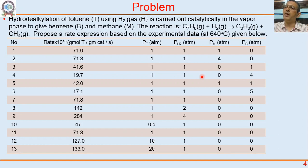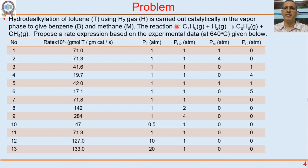For example, hydrodealkylation of toluene — let us call it T — using hydrogen gas H, is carried out catalytically in the vapor phase to give benzene B and methane M. The reaction is: toluene C₇H₈ (gas phase) plus hydrogen (gas phase) gives benzene (gas phase) and methane (gas phase). All are in the gas phase because the reaction is at high temperature.